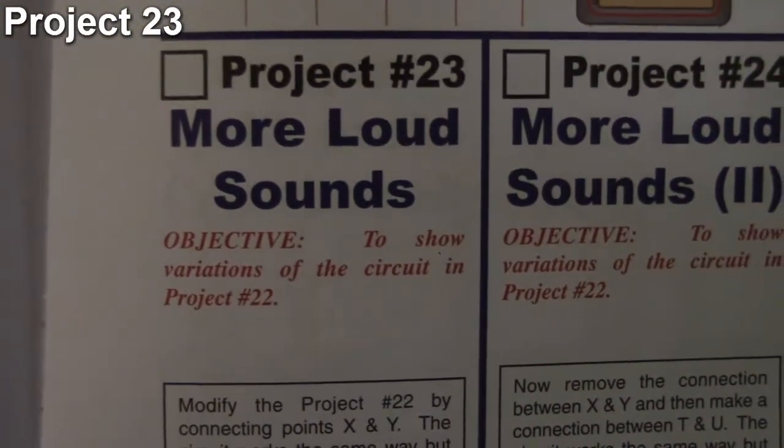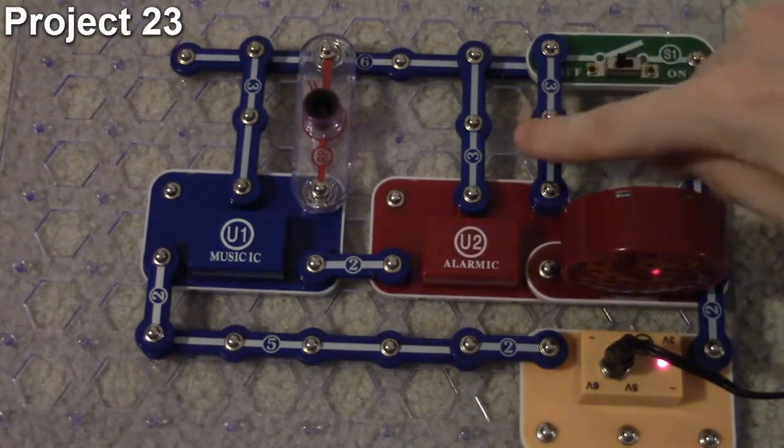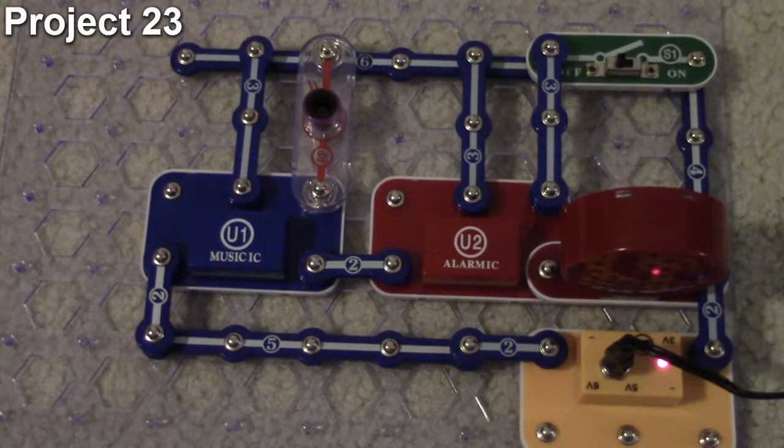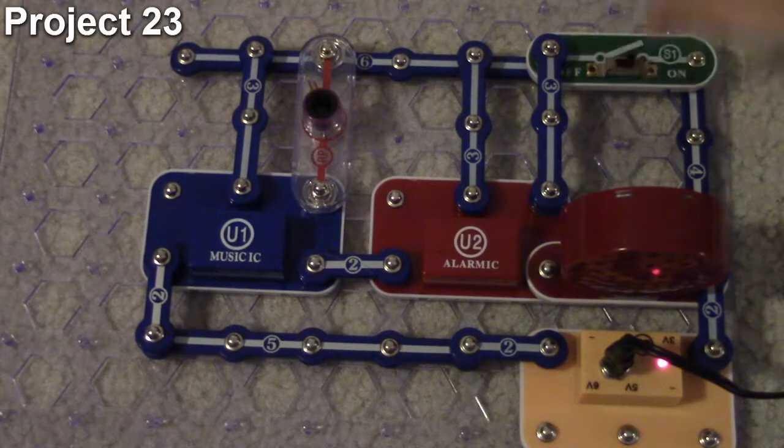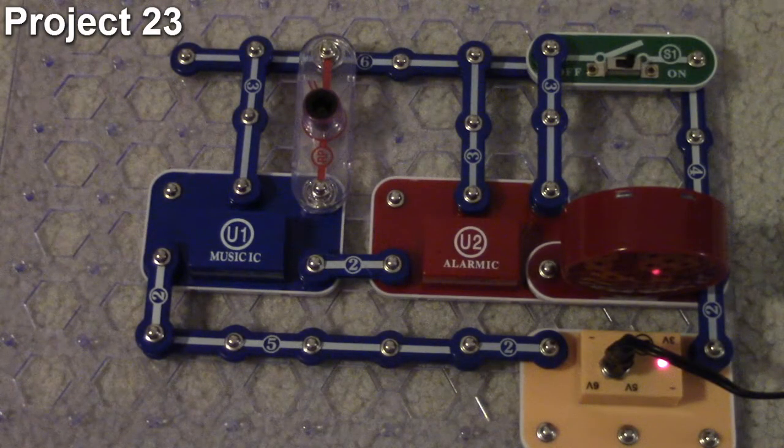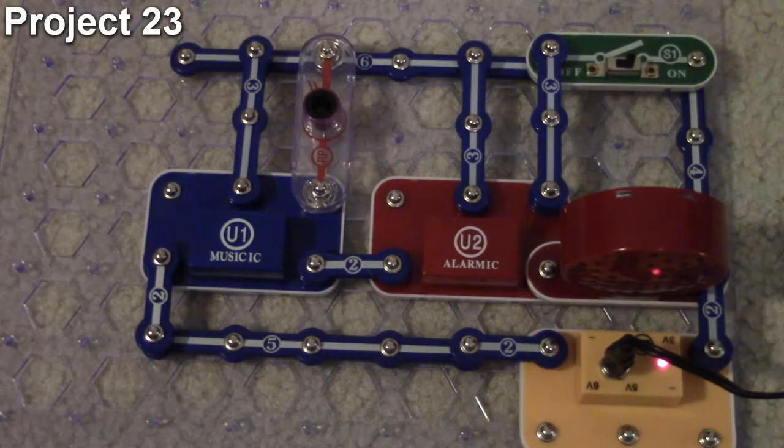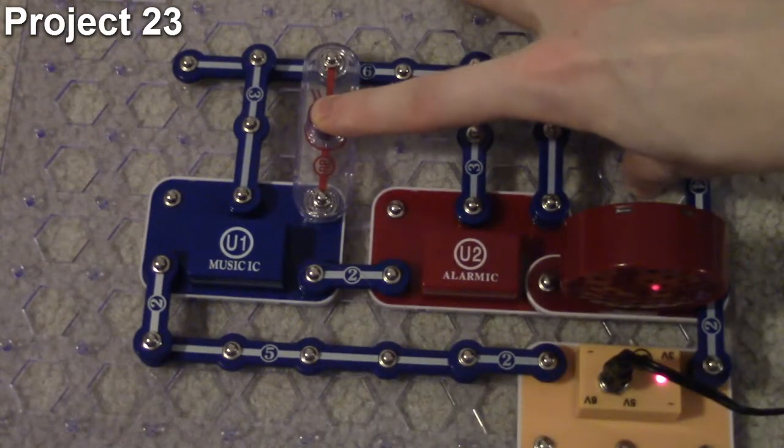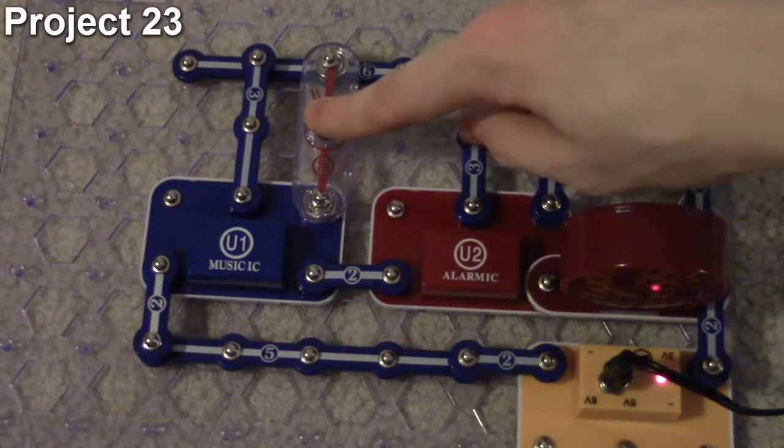Project 23 is more loud sounds, and basically the objective is just to modify the sound by putting another connector on this input here. So now we got two inputs on the alarm IC affecting the audio. We turn it on, it doesn't sound that much different from the last one, but what they're trying to do is simulate a machine gun with music.